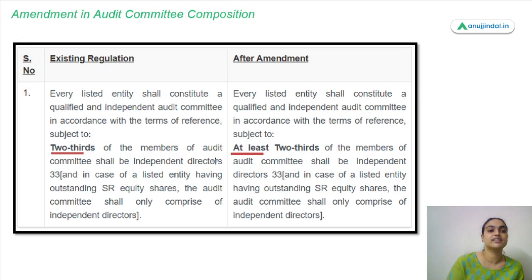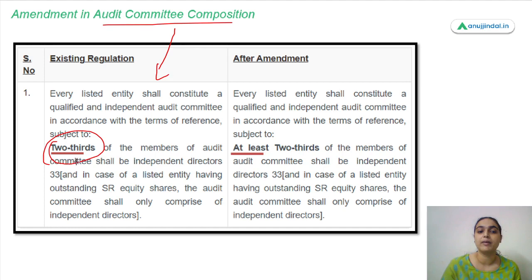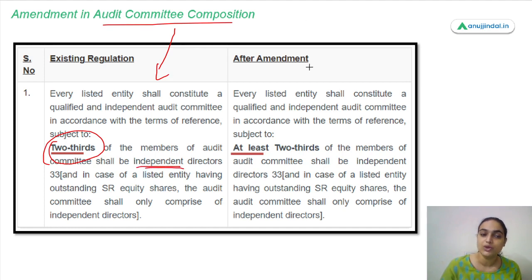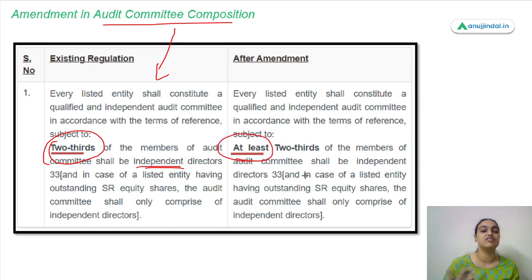The next amendment is with respect to audit committee composition. The existing regulation said that two-thirds of members should be independent directors. After the amendment, the new regulation says at least two-thirds of members should be independent directors — meaning you can have even more.